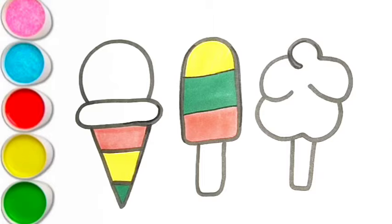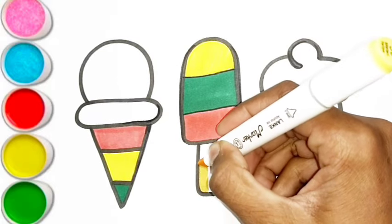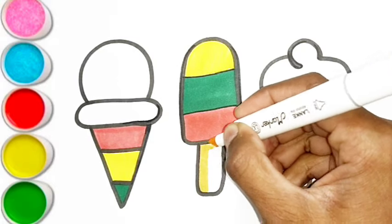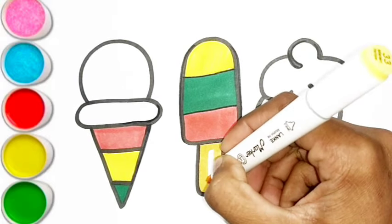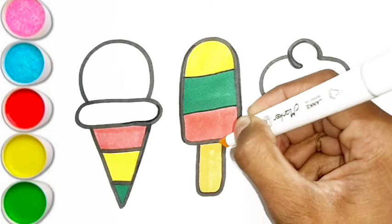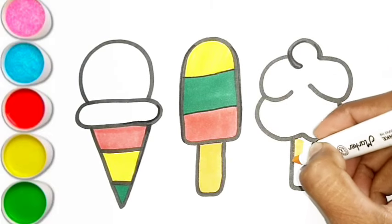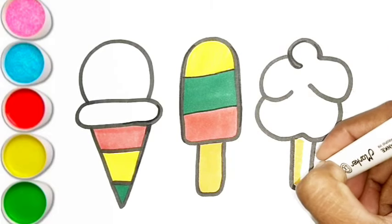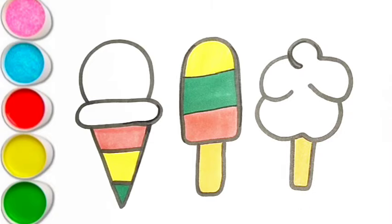V is for violin. V, v, violin. W is for watch. W, w, watch. X is for xylophone. X, x, xylophone.